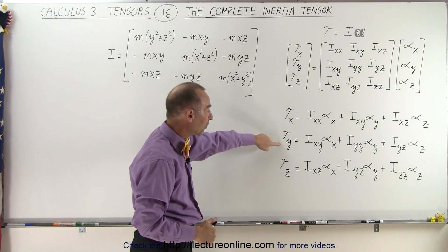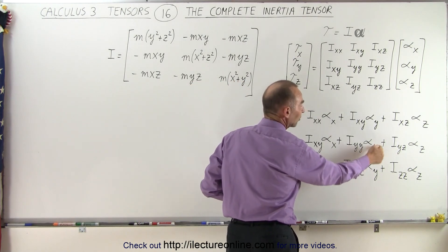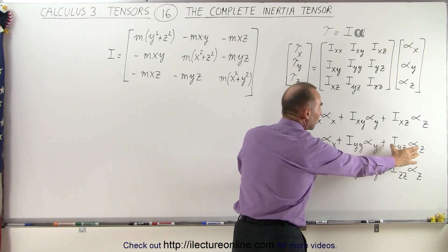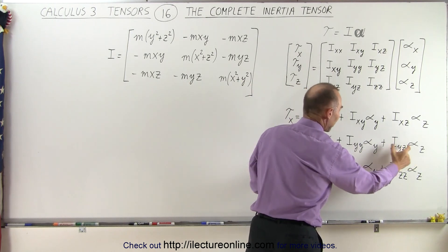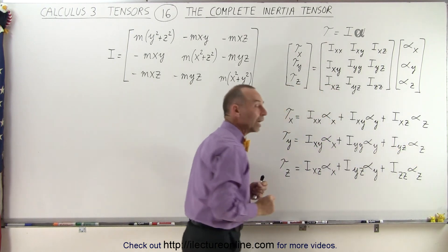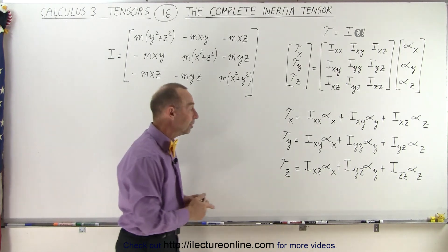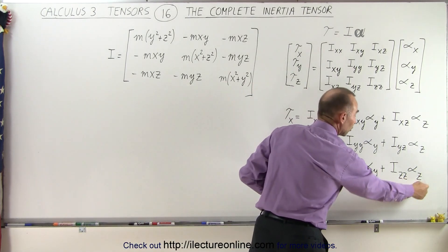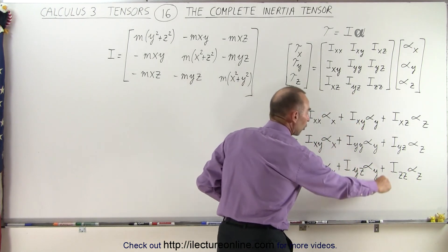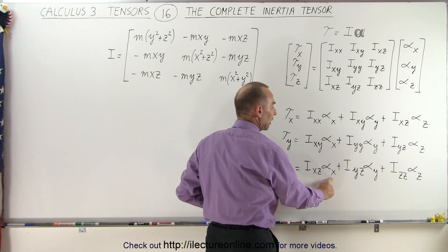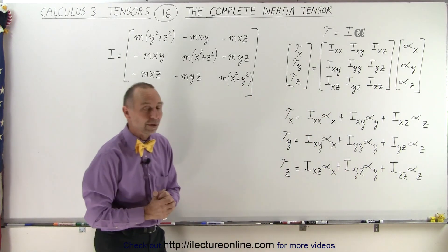When we apply a torque in the y-direction, we expect an angular acceleration around the y-axis — that's this diagonal term. But potentially it could also cause an angular acceleration around the x-axis or the z-axis if these off-diagonal terms are not equal to zero. And if we apply a torque in the z-direction, we expect an angular acceleration around the z-axis, but it could potentially also give us an angular acceleration around the x-axis or the y-axis if these off-diagonal terms are not equal to zero.